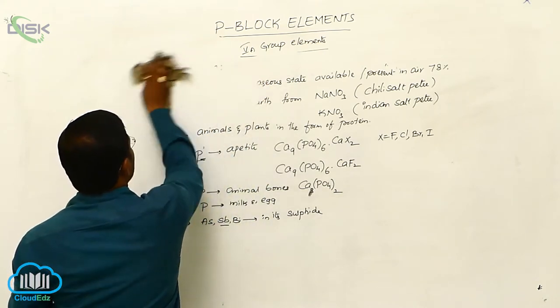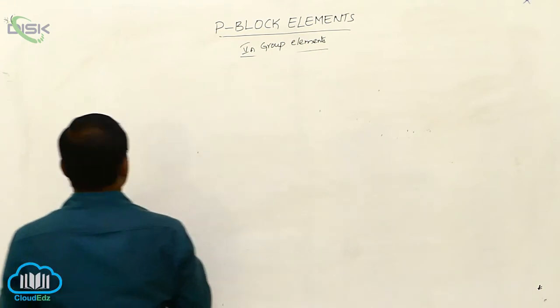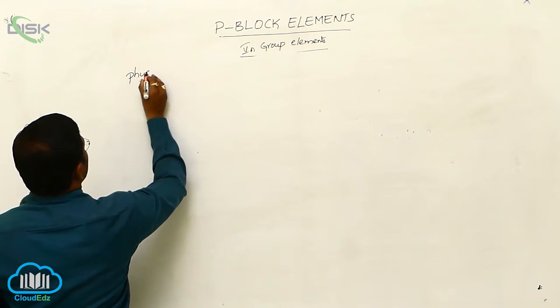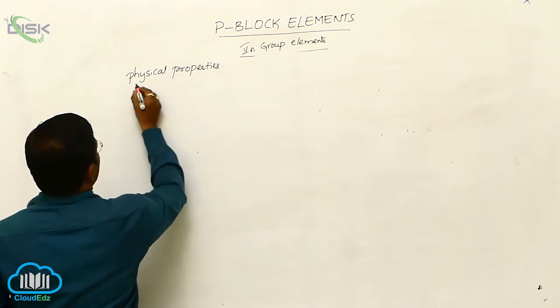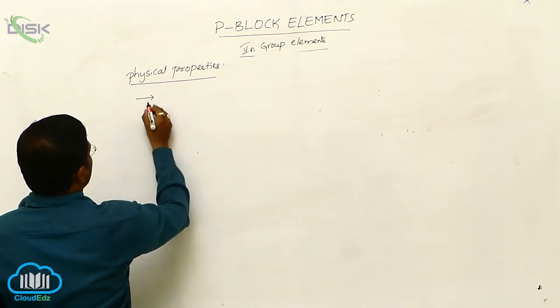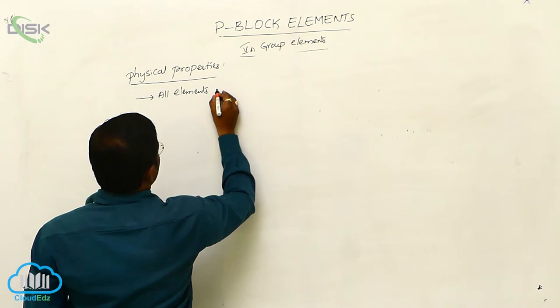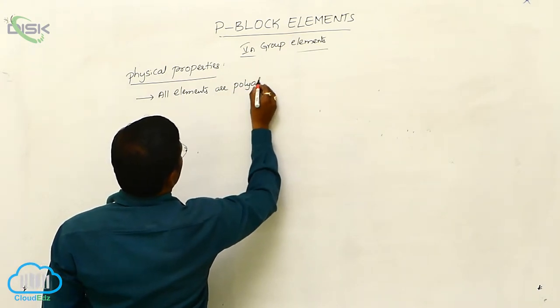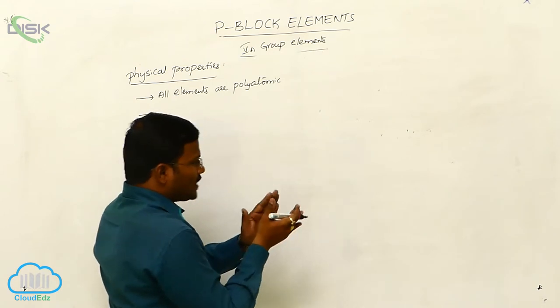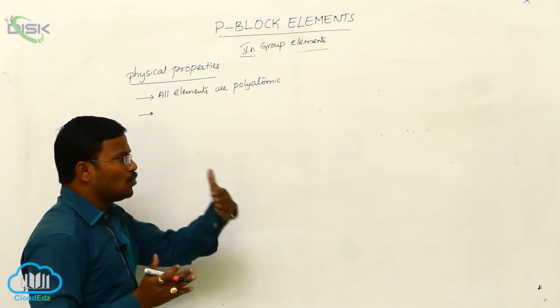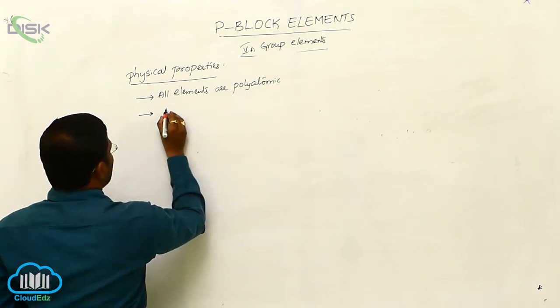Next one, physical properties of 5A group elements. In this physical properties, all the atoms or all the elements belong to 5A group. All elements are polyatomic. Because, to produce molecule from their respective or corresponding atoms, two or more atoms have to bind with each other to produce molecule. Hence, it is called as polyatomic. Generally, we can write it as nitrogen N2.